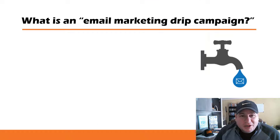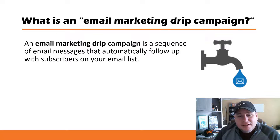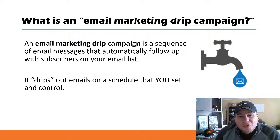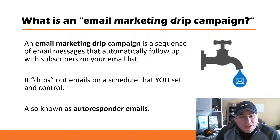If you're brand new to email marketing, you might already be aware of what an email drip campaign is, but I just wanted to do a quick review. Basically, an email marketing campaign is a sequence of email messages that automatically follow up with subscribers on your email list. It drips — meaning it goes out a drip at a time over a sequence on a schedule that you set up and control.